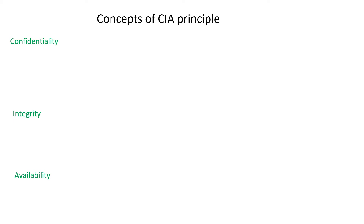These three elements are the end objective of any information security efforts. We want to ensure confidentiality, integrity, or availability of data or systems.